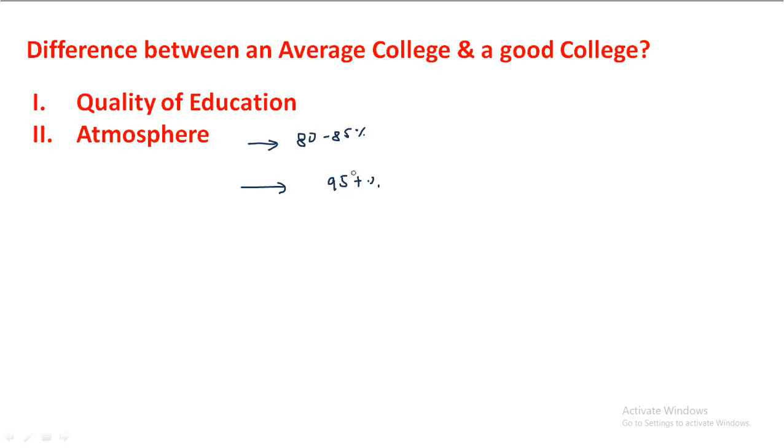Third and most important point: placements. There's a huge difference in placements. Good colleges obviously have better rates, and average colleges have lower average packages. In average colleges, there are also issues where students who don't perform well have difficulty getting placements or don't get placed at all. But in good colleges, even if you don't perform well, just for the brand sake, you still get placements. If you perform well in college, your chances of getting placements increase significantly.